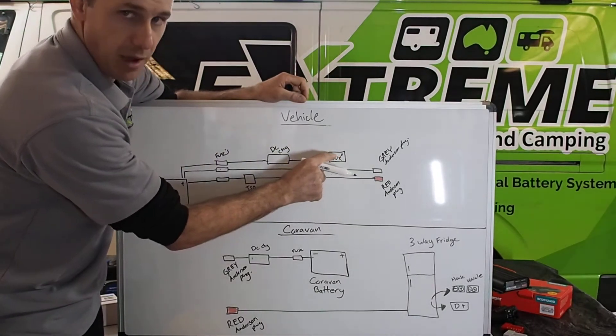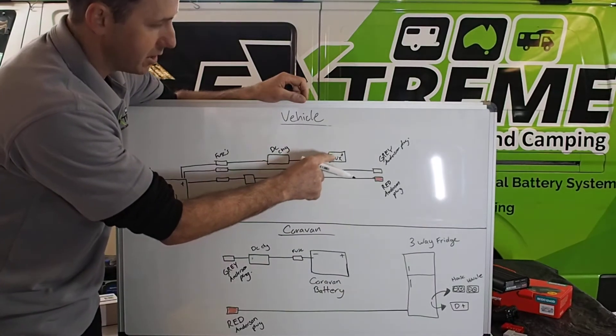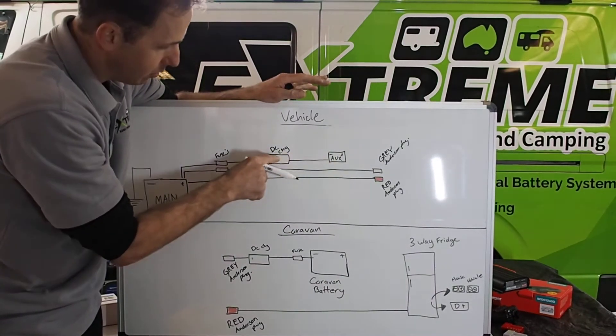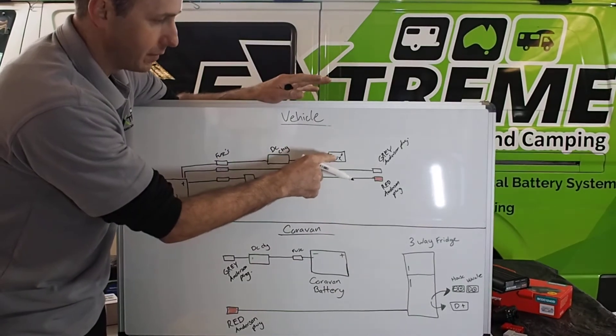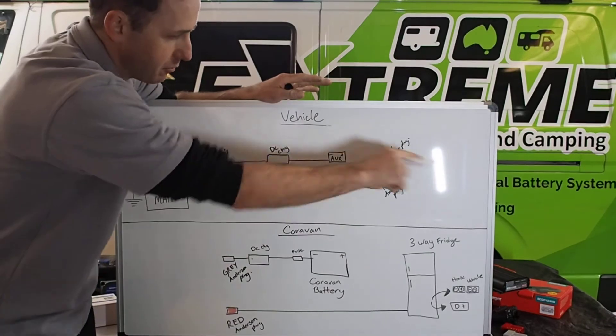So you're not taking any power, you're not robbing this battery, whether it's under your bonnet or in the back of your vehicle. Whatever's coming out of this DC charger is only going into this battery only. Nothing's coming out of it, not a three-way fridge, not another DC charger, nothing.